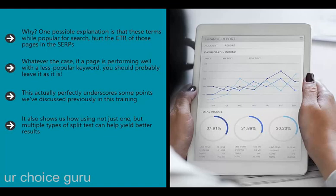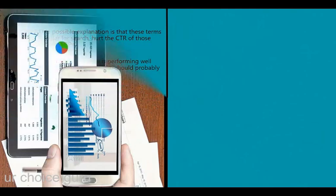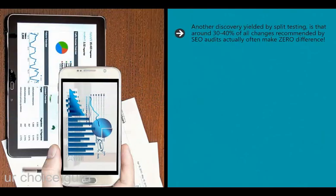Using not just one but multiple types of split tests can help yield better results. The research done via a typical matched pages method might have revealed even more if they'd also used a redirect to see if bounce rates and CTRs were responsible. Another discovery from split testing is that around 30-40% of all changes recommended by SEO audits actually make zero difference - showing us once again that what works in theory or on paper doesn't necessarily hold up in the real world, and demonstrating the value of conducting real split tests.